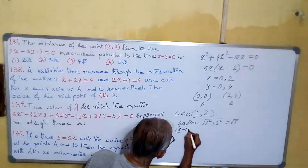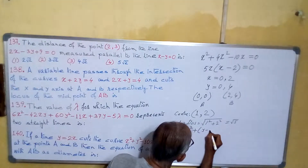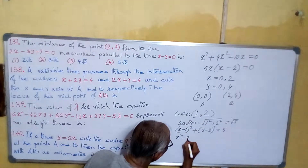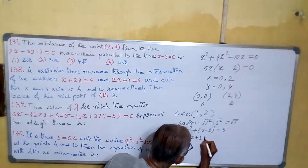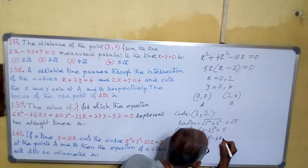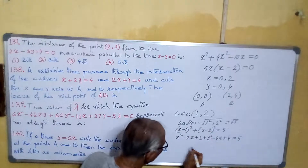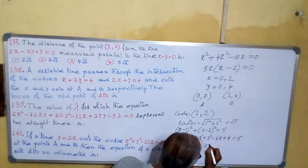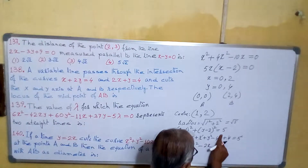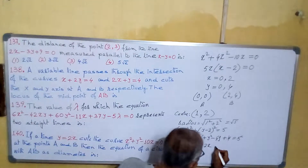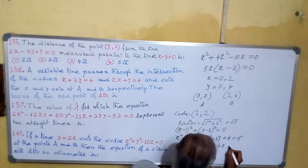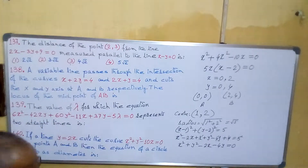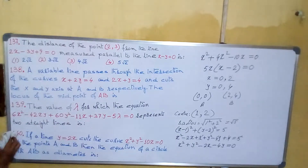So the equation of the circle will be (x−1)² + (y−2)² equals to 5. Expanding: x² − 2x + 1 + y² − 4y + 4 equals to 5. The constants cancel, so x² + y² − 2x − 4y equals to 0. This is our required equation of the circle. Now we will proceed to the next sum.